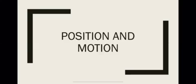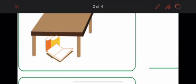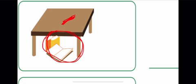Our lesson today is about position and motion. A position is the place where something is found. So can you tell me where are the books, as you can see in this picture? Are they on the desk or under the desk? They are under the desk or table. So this is how you know the position of an object.